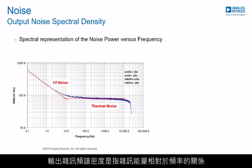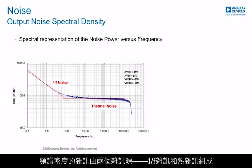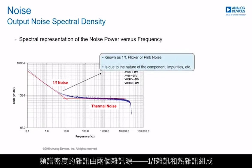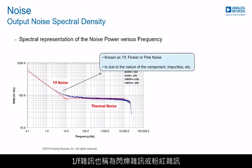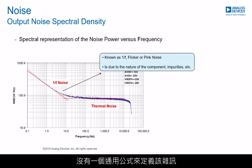The output noise spectral density is the noise energy with respect to frequency. The noise spectral density is made up of two noise sources: 1 over f noise and thermal noise. 1 over f noise is also known as flicker noise or pink noise. It is due to the nature of the components and impurities of the process. There is no general equation to define this noise.